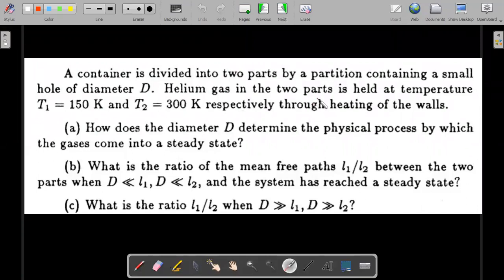Here's the formal wording of the question. There is a particular container which had a partition with a small hole of diameter capital D. Helium gas in two parts is filled up and maintained by heating the walls at constant temperatures of 150 Kelvin and 300 Kelvin respectively. Assume helium to be ideal gas. How does the diameter D determine the physical process by which the gas comes to a steady state? That's a theoretical question which we answered in the Resolve video.